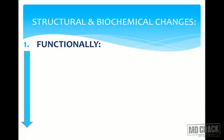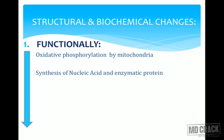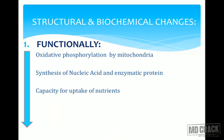At the molecular level, as cells advance in the aging process, there is reduced oxidative phosphorylation by mitochondria, resulting in decreased ATP production. There is also decreased synthesis of nucleic acids and enzymatic proteins, decreased capacity to take up nutrients, and decreased capacity to repair DNA damage incurred during aging. This DNA repair mechanism becomes progressively hampered as aging advances.